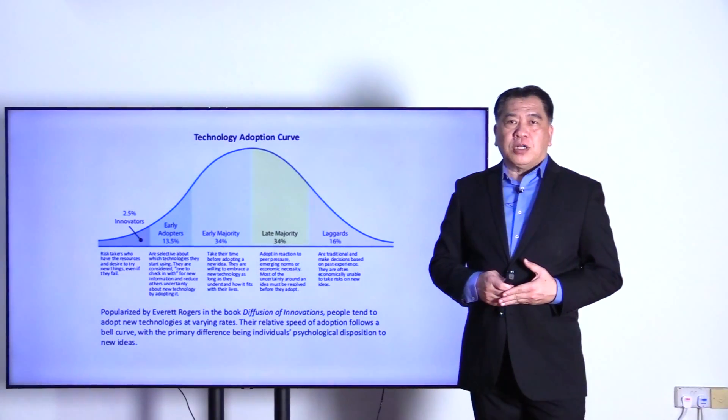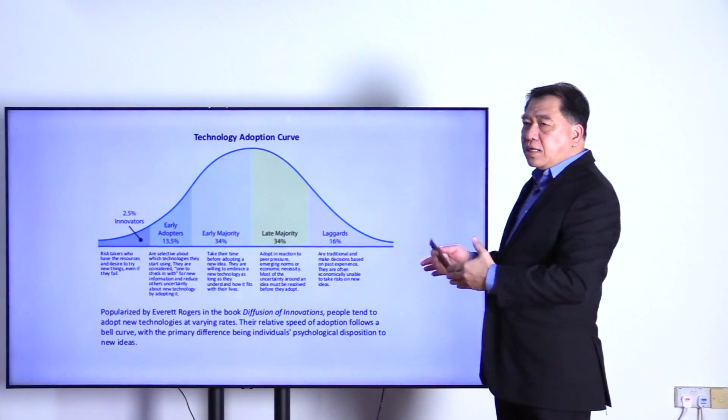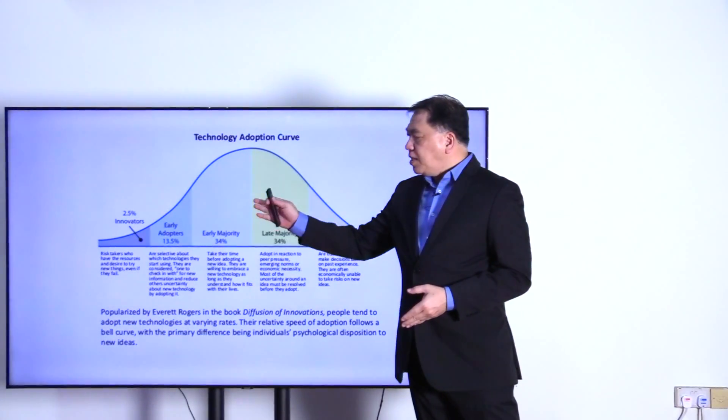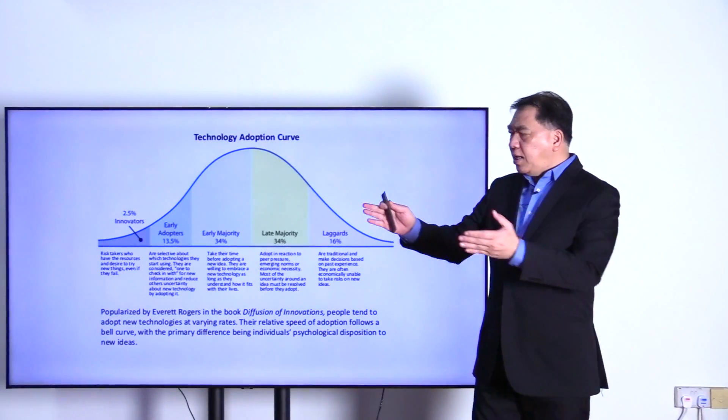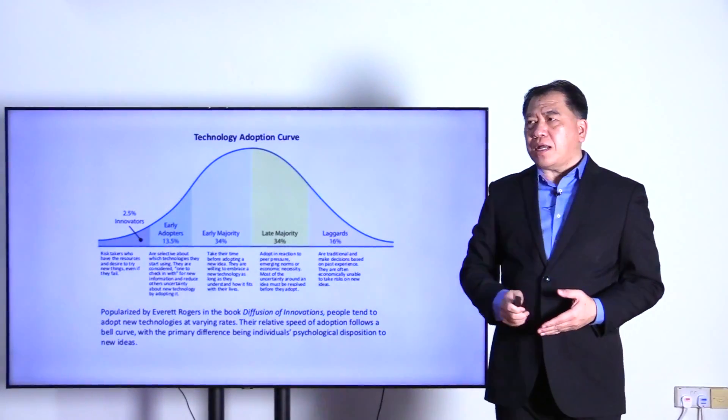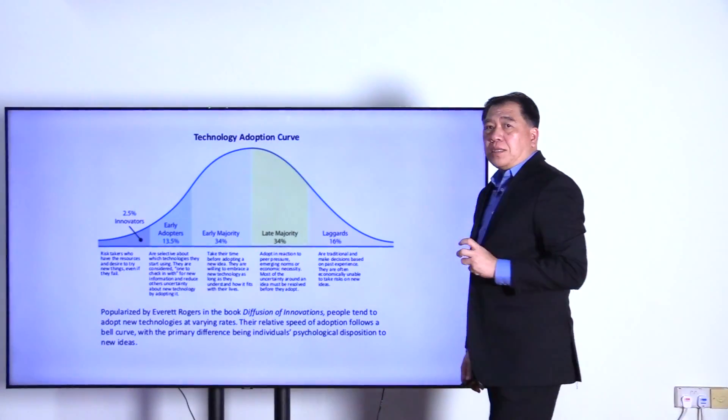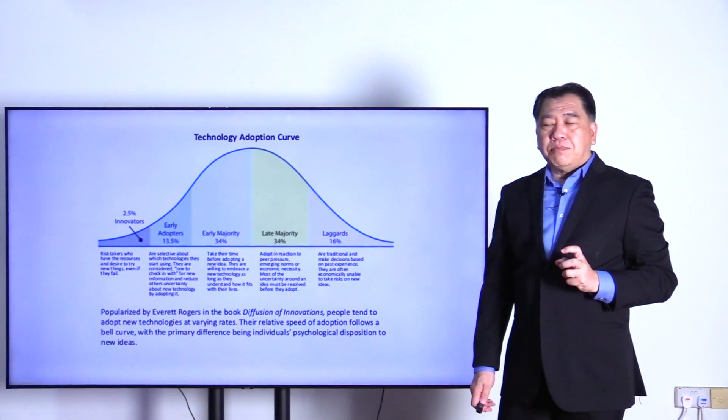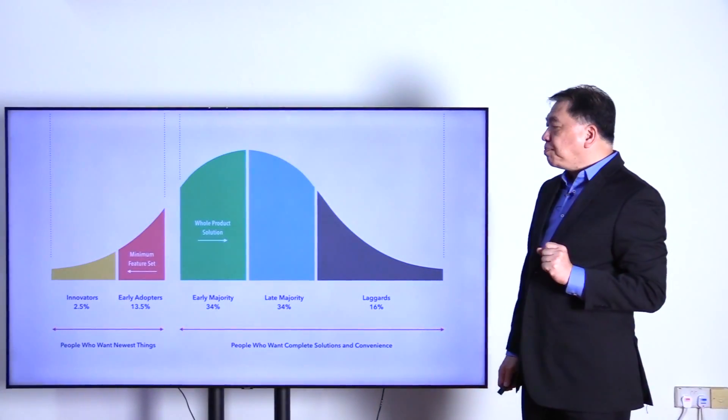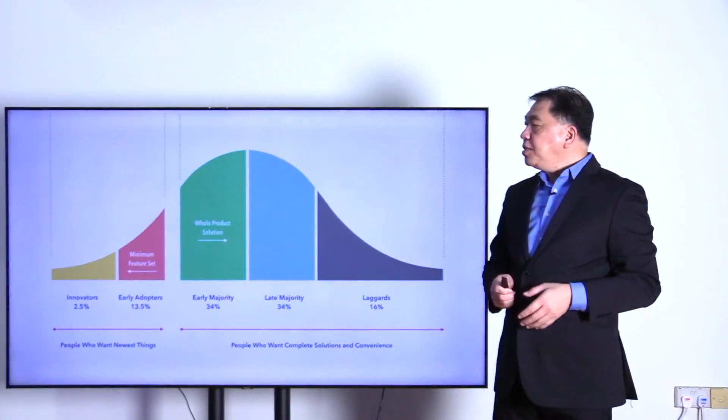Then we talk about the technology adoption lifecycle. The emerging technology has to go into the market. That's how we segment the market from innovators, early adopters to the later market called the early majority and the late majority. What we're really interested in is making sure that we enter the mainstream market.